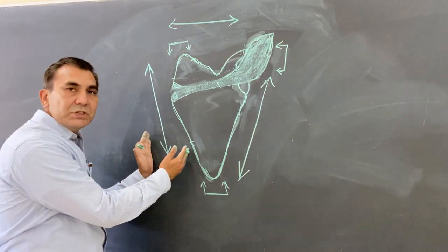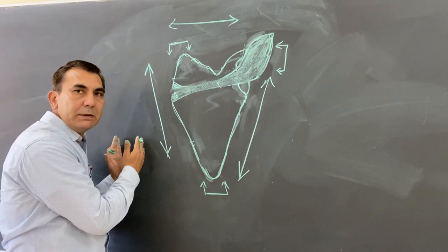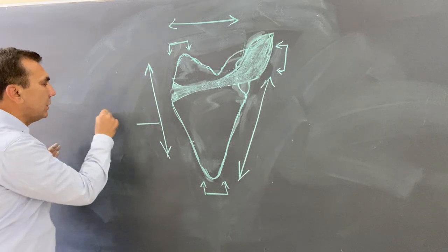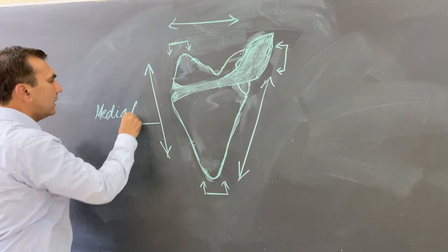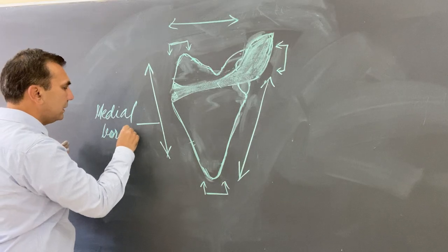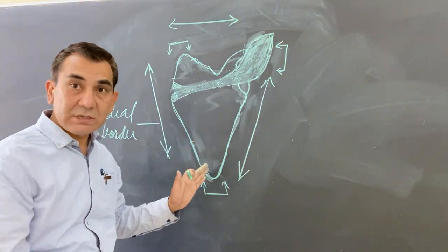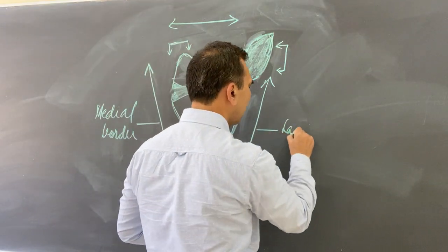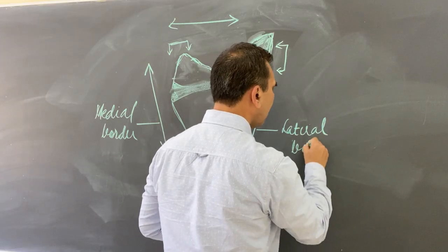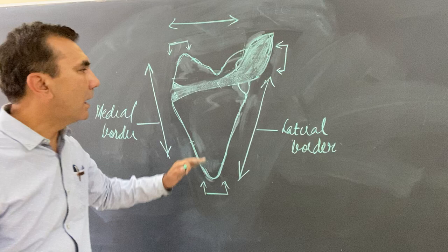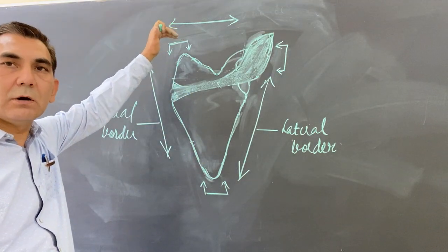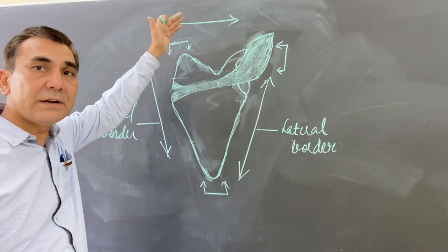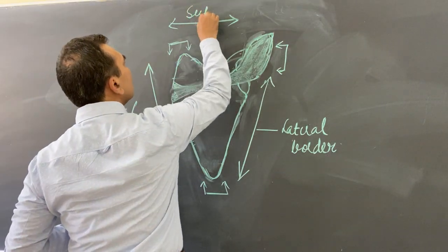The border which is towards the mid-plane, towards the vertical column, this border is called the medial border. The border which is away from the mid-plane, towards the lateral side, is called the lateral border. The third border, which is on the upper side towards the head, this border is called the superior border.